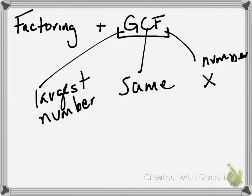So when we're finding the GCF, we're finding the largest number that's the same between two different numbers that we can use to multiply it. Let's do an example.